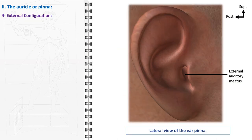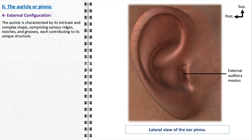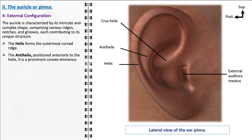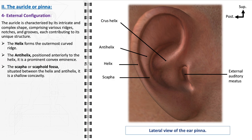The auricle is a finely tuned acoustic apparatus, where each ridge, notch, and groove plays a specific role in the process of hearing. The helix forms the outermost curved ridge of the auricle, wrapping around the ear and acting as a natural barrier that guides sound waves into the ear canal. The crus of the helix represents the starting point of the helix — a curved elevation akin to a ridge or fold of cartilage. Just anterior to the helix lies the antihelix, a prominent convex eminence that further aids in collecting and directing sound waves. Between the helix and antihelix is the scapha, or scaphoid fossa, a shallow concavity that enhances the auricle's ability to capture sound.